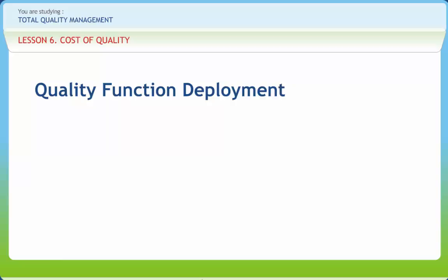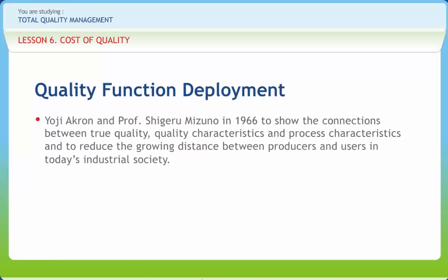QFD was developed by Professor Yoji Akao and Professor Shigeru Mizuno in 1966 to show the connections between true quality, quality characteristics, and process characteristics, and to reduce the growing distance between producers and users in today's industrial society.